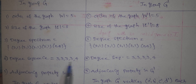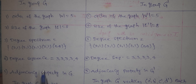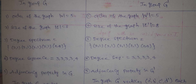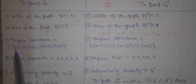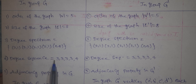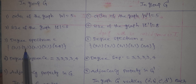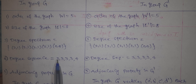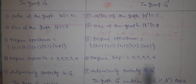Let us check the degree sequence. The sequence is 3, 3, 3, 3, 4. There is no difference in the sequence — it is the same for both graphs, so the degree sequence condition is satisfied.